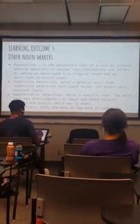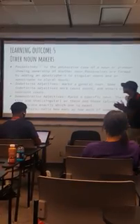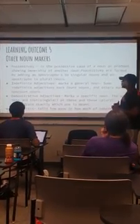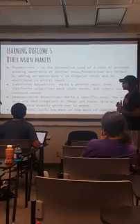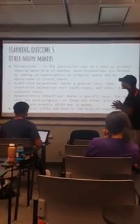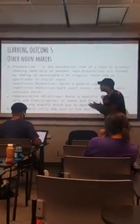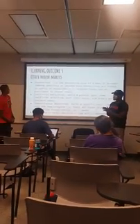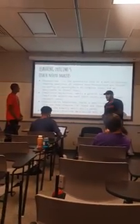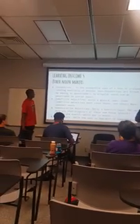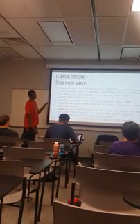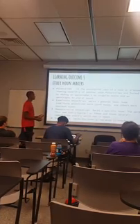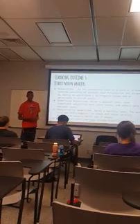And then learning outcome five: other noun markers. You have possessive, indefinite, demonstrative, and quantifiers. Possessive is the case of nouns and pronouns showing ownership of another noun — so like yours, my, other stuff like that. For possessive, you usually add apostrophe-S to singular nouns, and to plural nouns you add just an apostrophe.